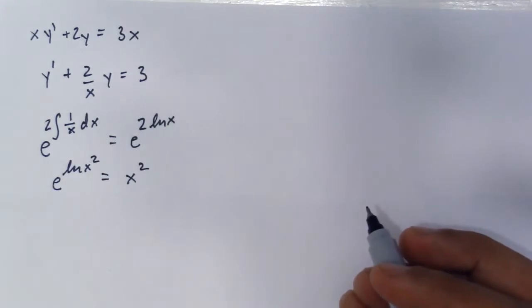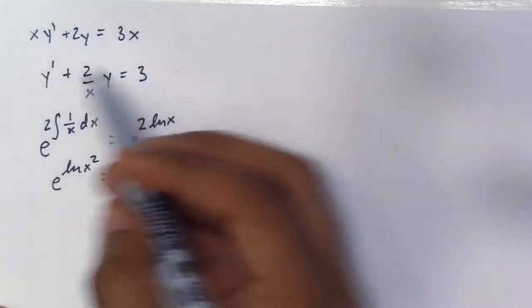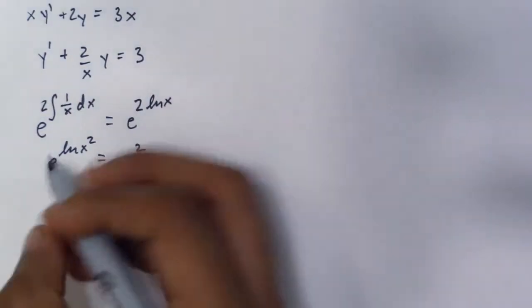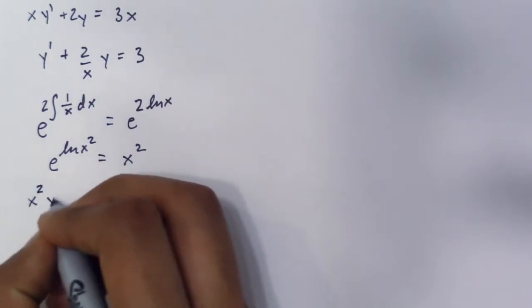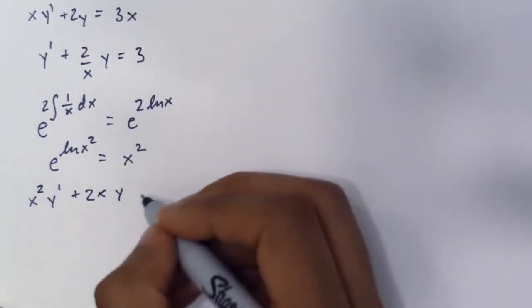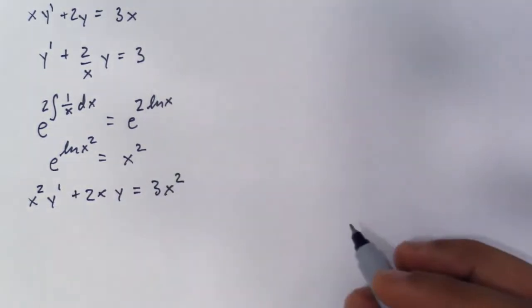Now since we have the integrating factor, we multiply everything by x squared in this formula. So you simply do x squared y prime plus 2x times y equals 3x squared. Now you may be seeing a formula, a general formula.